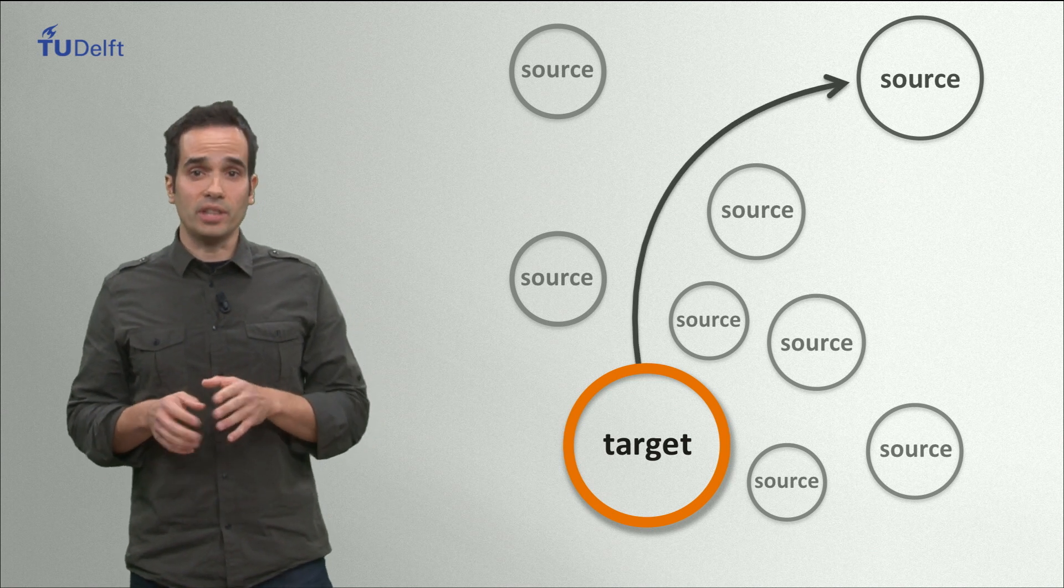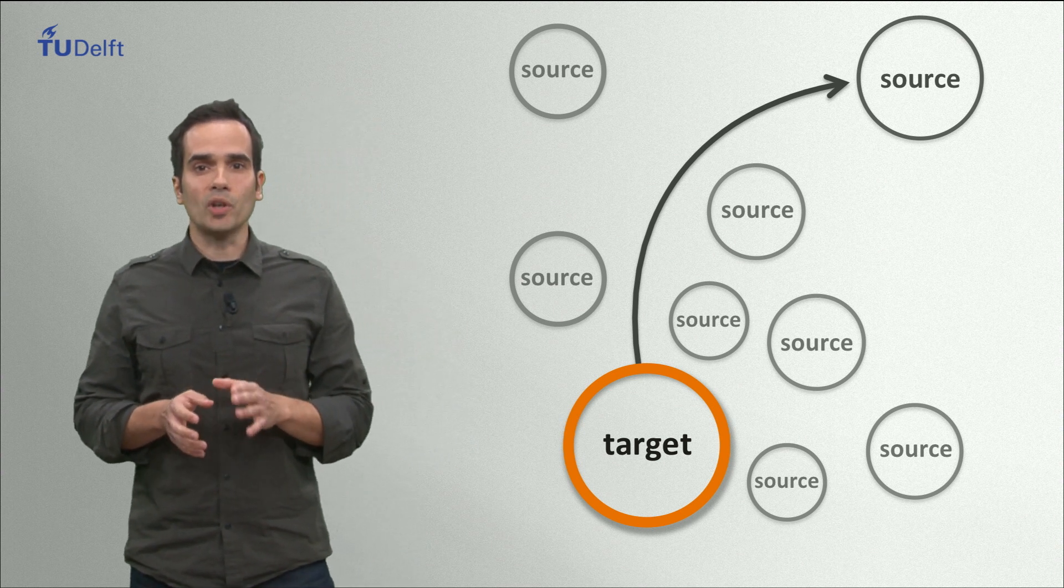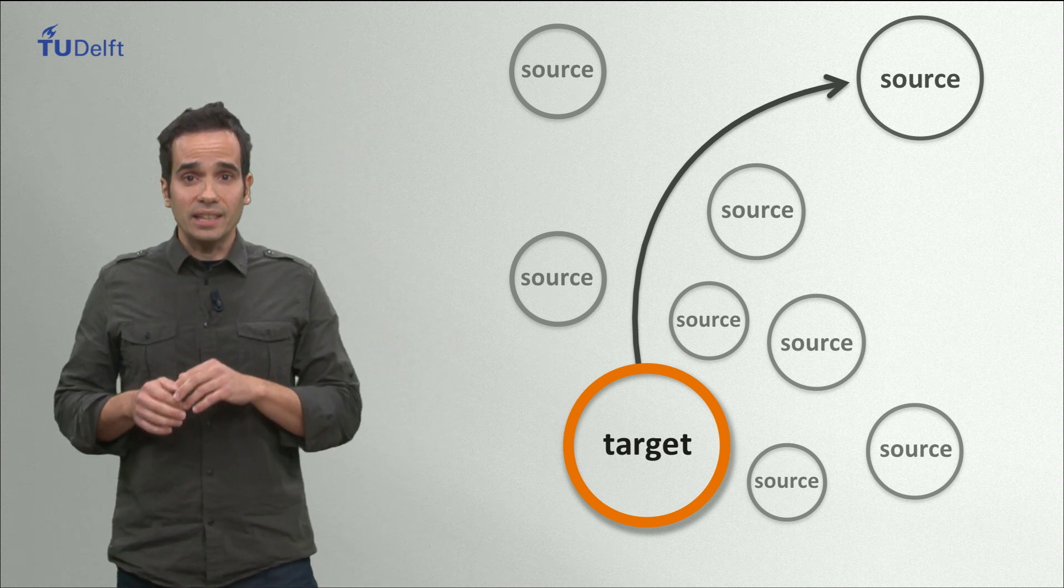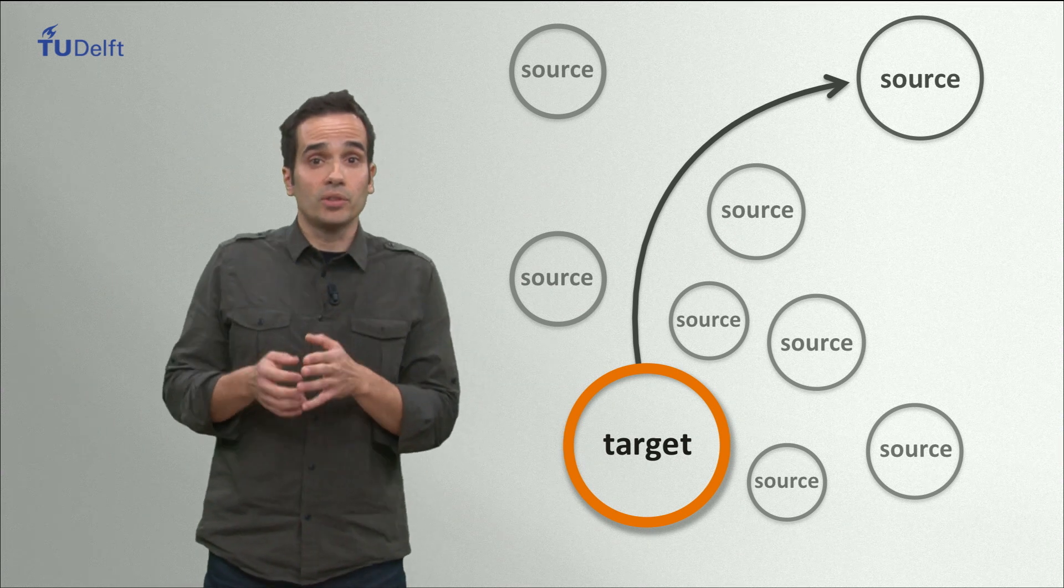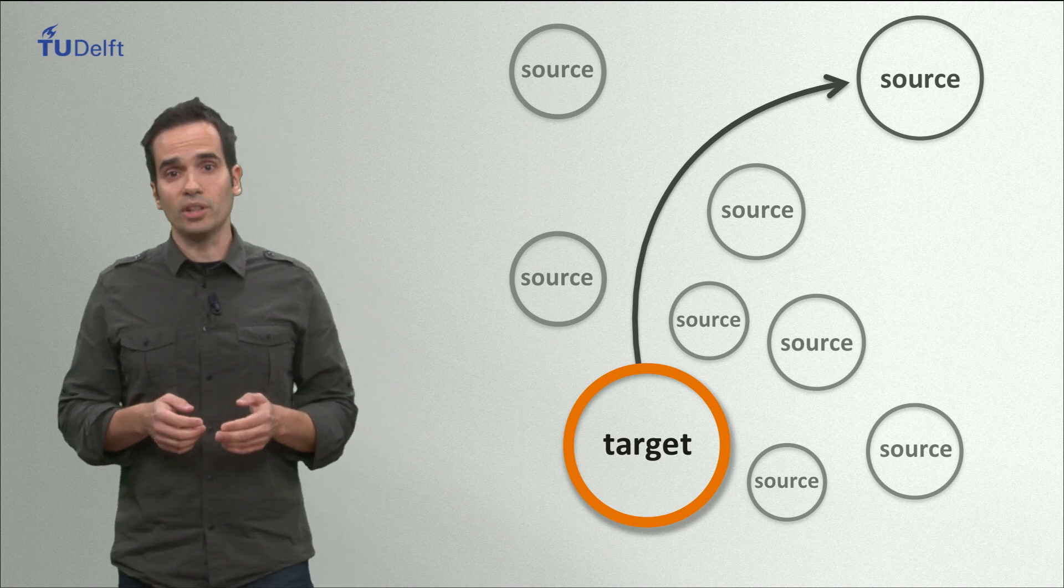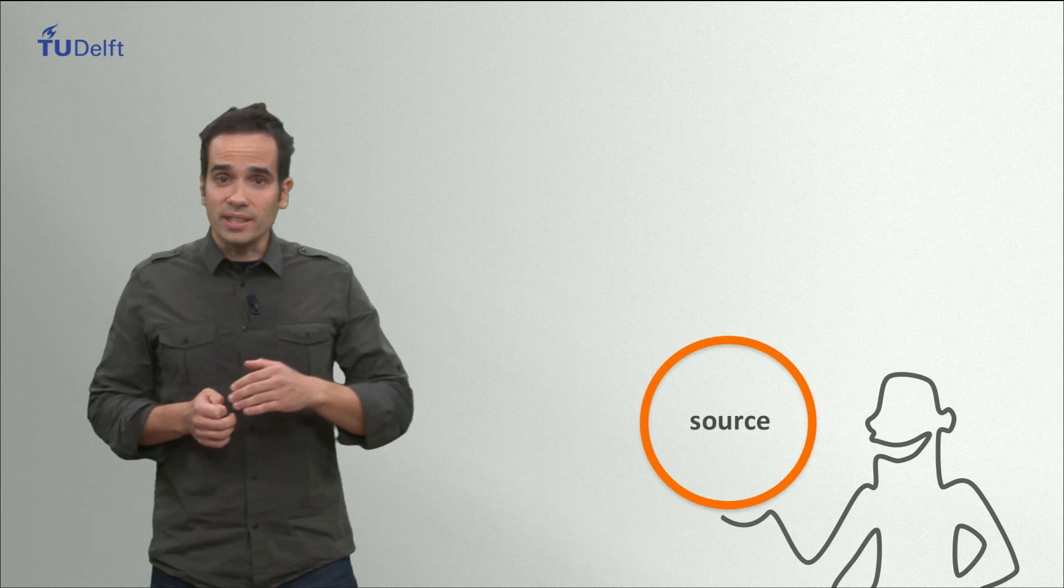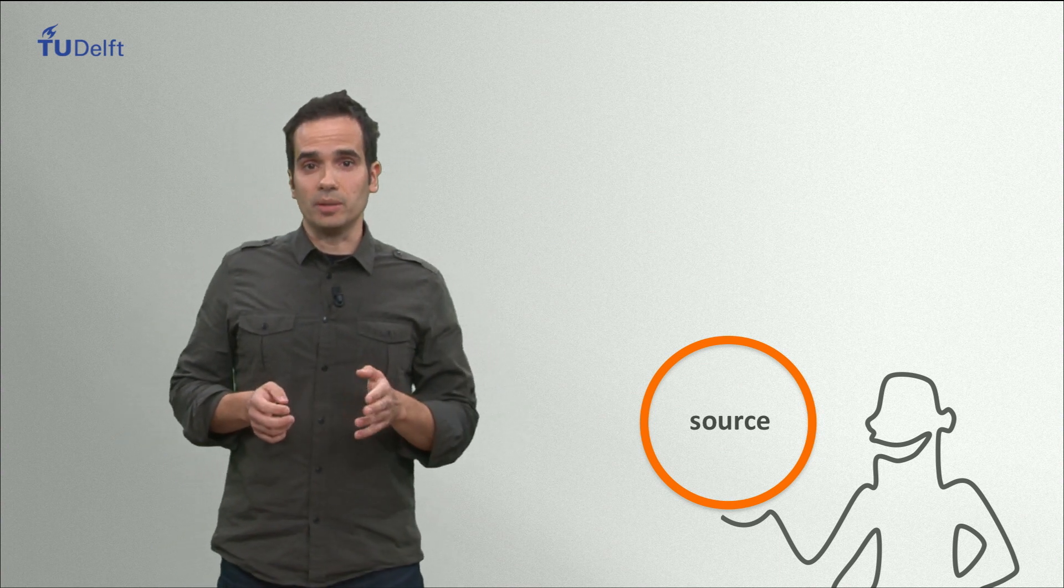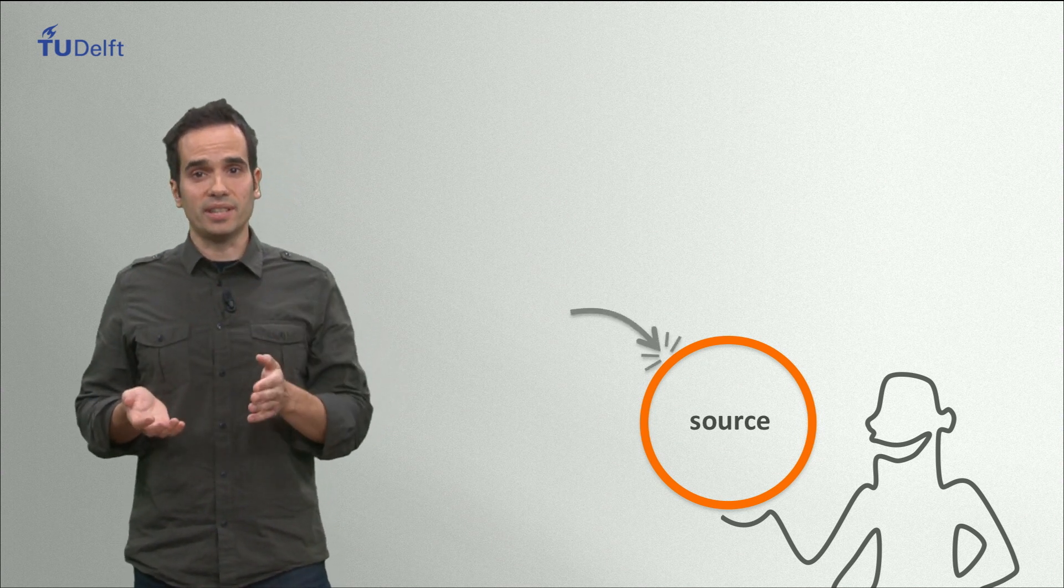So, when that student that I mentioned was designing a new helmet, for instance, he explored a domain that at first sight had nothing to do with the initial problem, instead of limiting himself to search for existing helmets available in the market or other types of protective gear. However, this search for sources in far distant domains will be challenging because the thing you are trying to look for might not be so evident at the surface level, but instead it could be hiding deep inside the source.